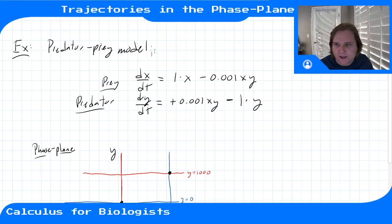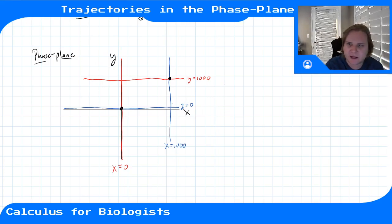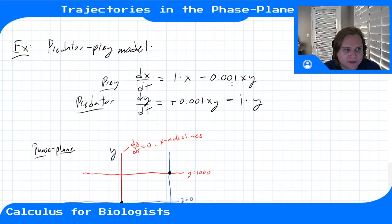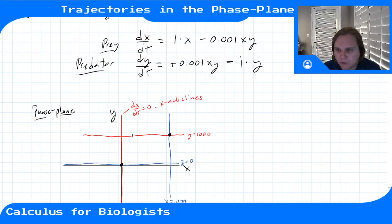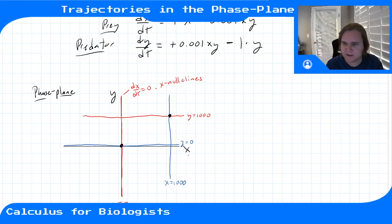Last time we plotted the nullclines in the phase plane — the graph where x is the number of prey and y is the number of predators. In red we plotted the x-nullclines: curves where dx/dt equals zero. Either x equals zero (no change in prey along that line), or y equals 1000 (the other curve of no change in prey). In blue we plotted the y-nullclines where dy/dt equals zero.